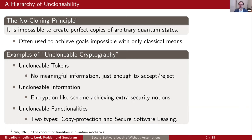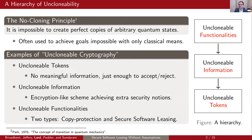One of the ideas we're trying to promote here is that all of these three notions can be seen as part of a hierarchy, where at the top of the hierarchy you have the functionalities, followed by unclonable information, followed by unclonable tokens. At every level of the hierarchy, these are more and more complex things that are rendered unclonable by using the no-cloning principle.